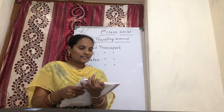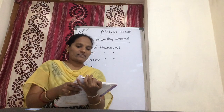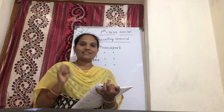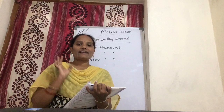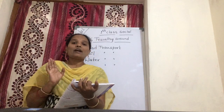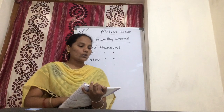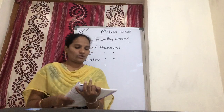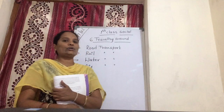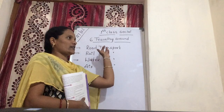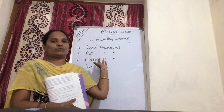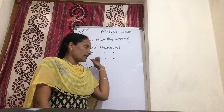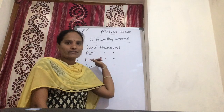Big rivers like Ganga and Brahmaputra are used extensively as an inland means of water transport. Water transport may be slow as compared to road transport. It is taking so much time.